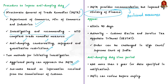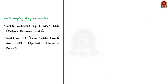If anti-dumping duty is imposed, aggrieved parties can appeal against it in the Customs, Excise and Service Tax Appellate Tribunal within 90 days of imposition. If not satisfied, they can further go to the High Court or Supreme Court of India. In general, anti-dumping duty remains in force for not more than five years. Notably, it does not apply to goods imported by 100% export-oriented units, units in free trade zones, and special economic zones.